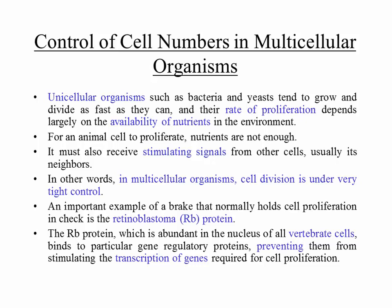Once you're an adult, you don't see your body growing new organs — under normal circumstances that doesn't happen. An important example of a brake on cell division is the retinoblastoma protein, or RB protein. Retinoblastoma is a cancer of the eye, and people born with a defect in this gene develop eye tumors that can be fatal by age two. The retinoblastoma protein is abundant in the nucleus of all vertebrate cells.